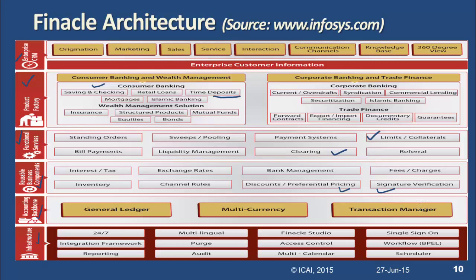The major part is the Accounting Backbone — a transaction manager which records transactions in multiple currencies and posts updates to the general ledger. When a transaction is carried out through the transaction manager, the end result is a general ledger entry. Infrastructure includes 24×7 support, access controls, multiple calendar support (different calendars per state or branch), schedulers, single sign-on (sign on once and access extends to other systems), and auditing and purging features.